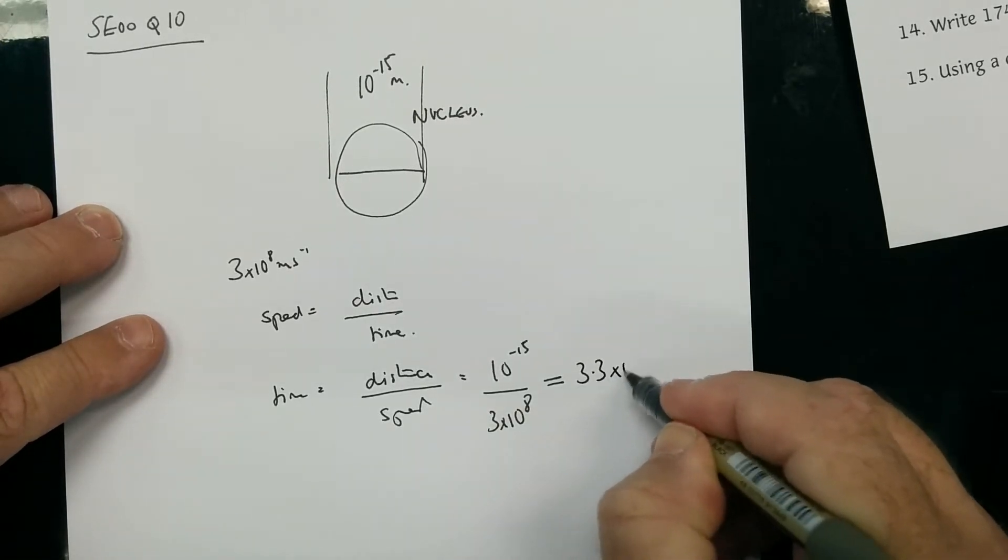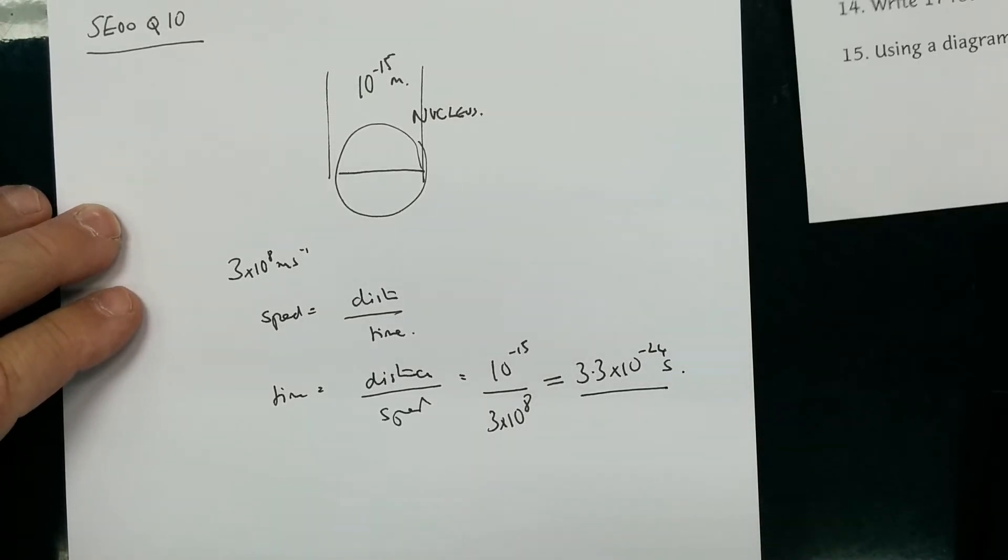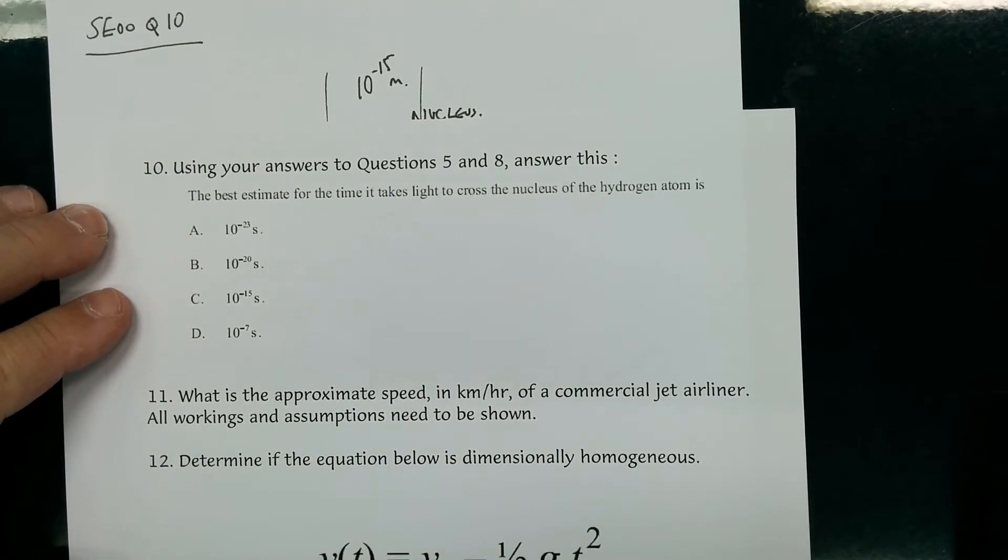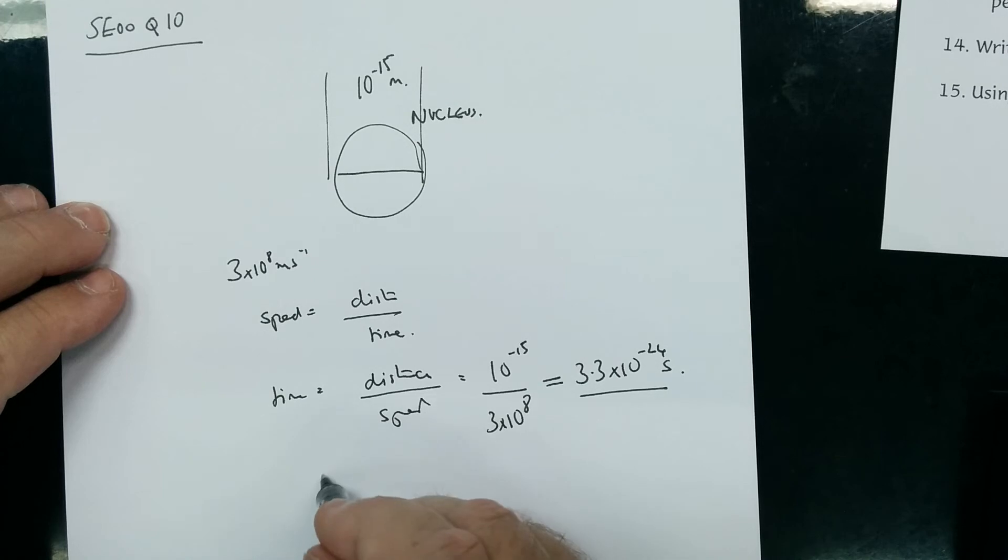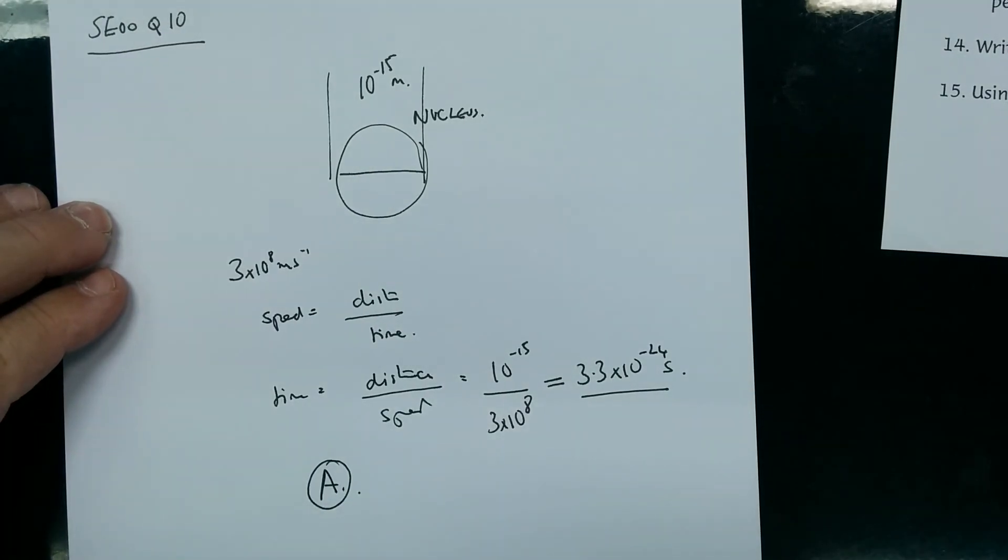We bring the answers back. We want something of the order of 10 to the minus 24. The closest one to that is A, 10 to the minus 23, so the answer is A. Notice when you do those questions you must show all your working.